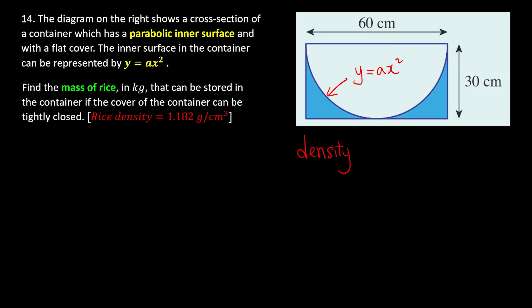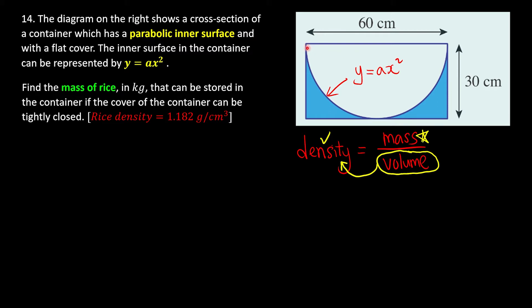Recall that the formula for density is mass divided by volume. Since they ask us to find the mass and they give us the density, the volume is the quantity we need to find. We can find the mass by using mass = density × volume. We know from integration that we can find the volume generated by this curve.